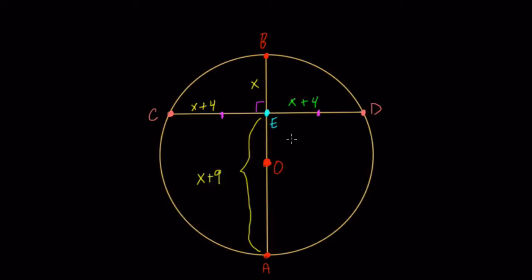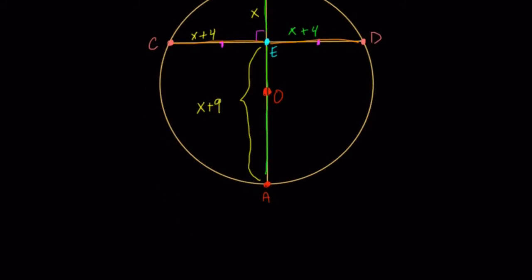And at this point, we can go a little bit further, because whenever you have two chords that cross in a circle, the product of the segments is proportional. So here, AE times EB, the product of these two segments, is going to be equal to the product of these two segments right here. And so because of that, we can set up an equation. So here, let's do that.